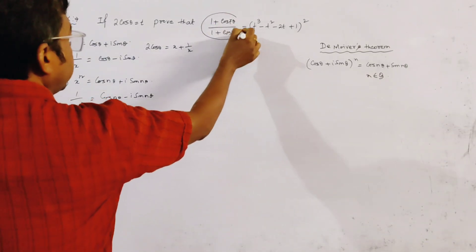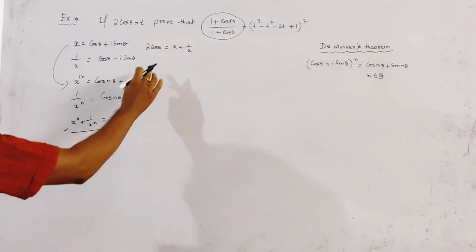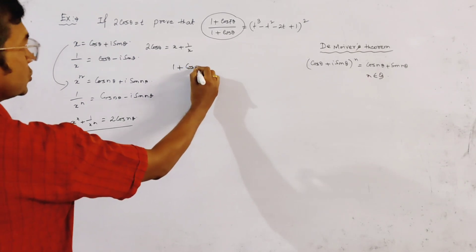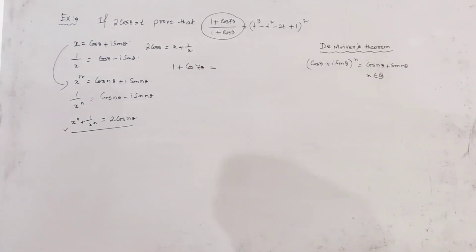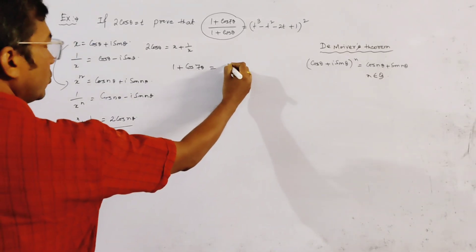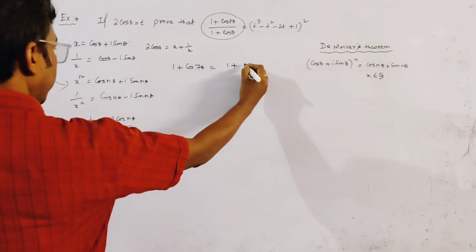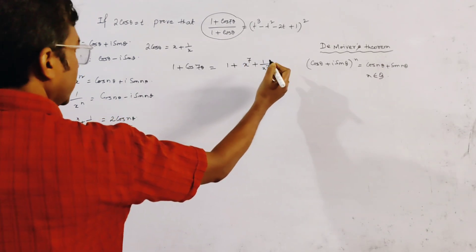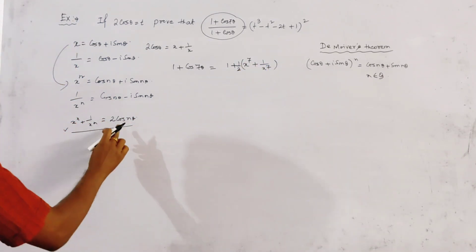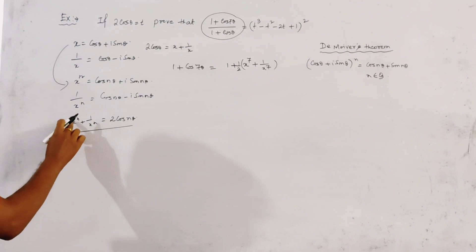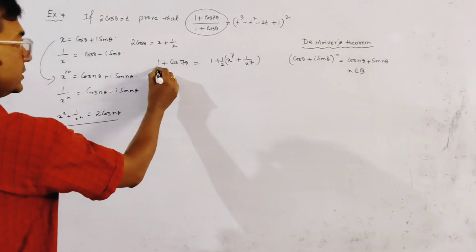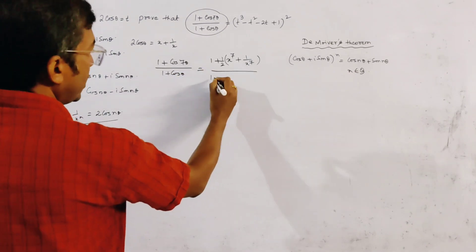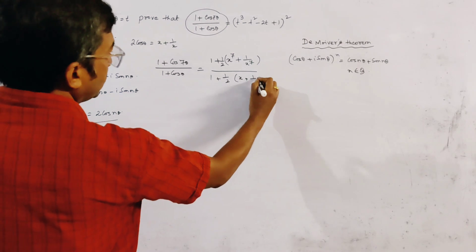We write the left-hand side using this result. We get 1 + cos7θ = 1 + (x⁷ + 1/x⁷)/2, and 1 + cosθ = 1 + (x + 1/x)/2.